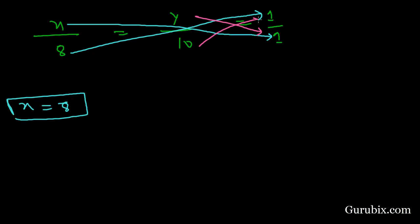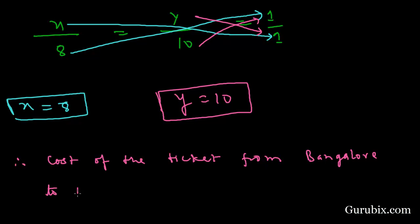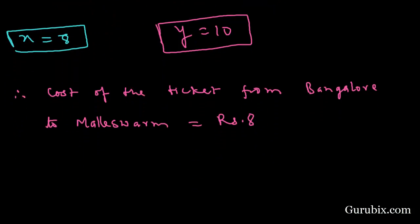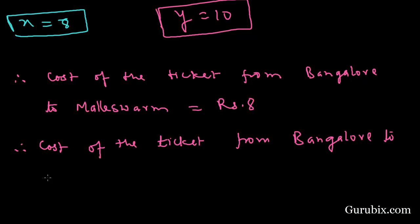Therefore, the cost of the ticket from Bangalore to Maleshwaram is rupees 8, and the cost of the ticket from Bangalore to Yashwanthpur is rupees 10.